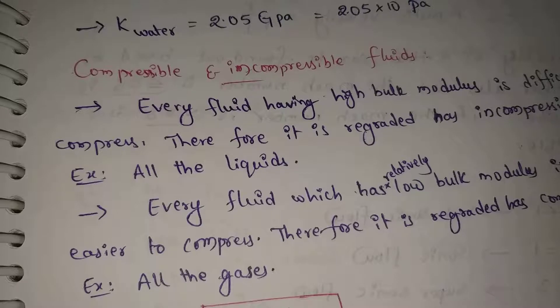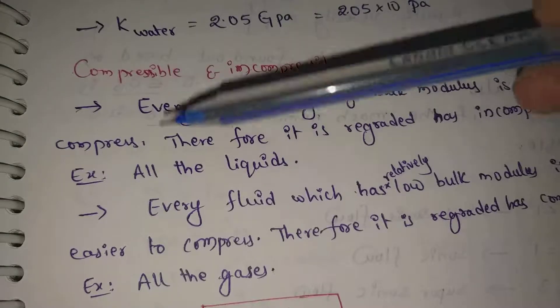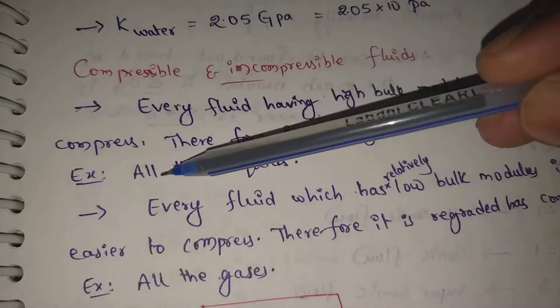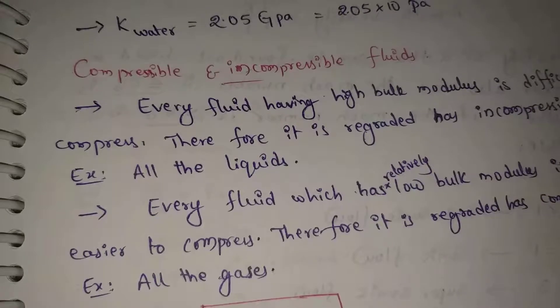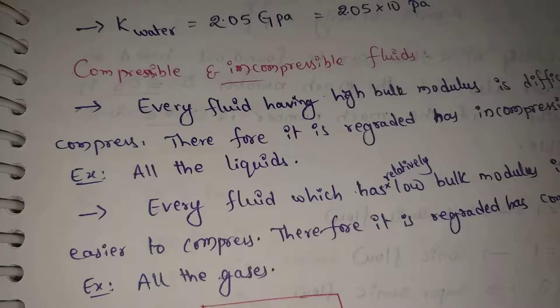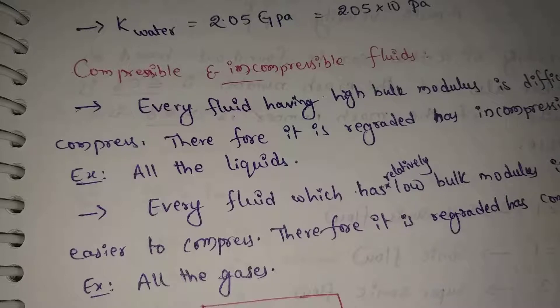For example, all liquids — every liquid is incompressible. Water is incompressible. Why? Because it is a liquid, and liquids have high bulk modulus, making them incompressible fluids.